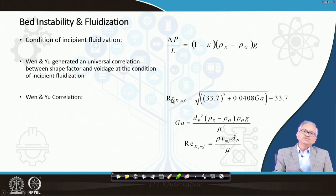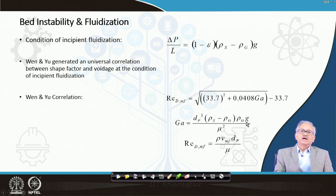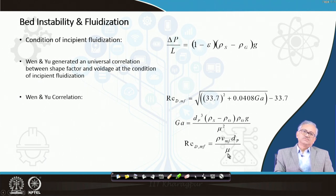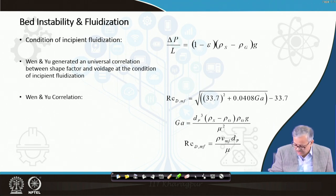That universal correlation makes life very easy: the voidage and shape factor equal some constant under incipient fluidization. You can then get a simple expression for the Reynolds number at incipient fluidization: Re_mf = f(Ga), where Ga is the Galileo number — a function of particle diameter, density of solid, density of gas, and viscosity of gas. If you know these parameters, you can calculate the minimum fluidization velocity.